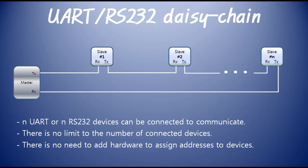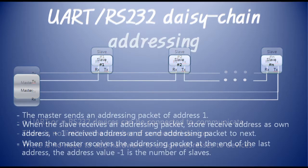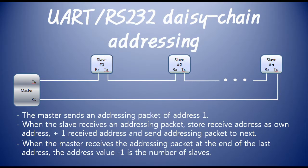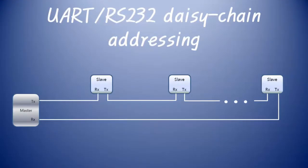For example, we use a simple packet structure of slave address plus command plus payload, for each one-byte packet. After the first bus is connected or powered up, the master must assign an addressing packet to each slave device. The master sends a packet: 1 + COMMAND_ADDRESSING + dummy. Now all slave devices will have their own address.